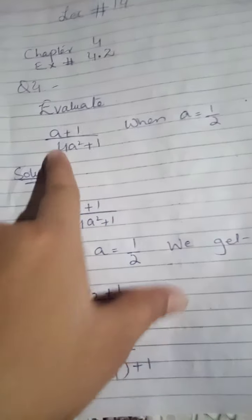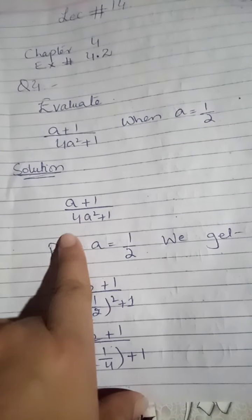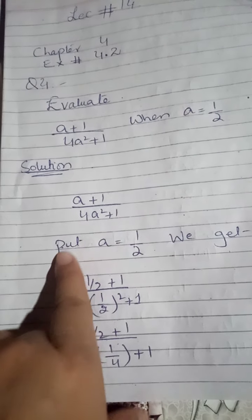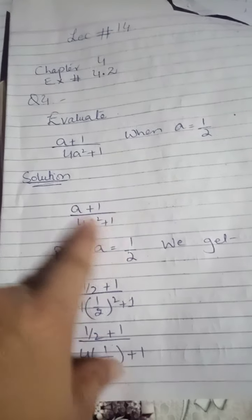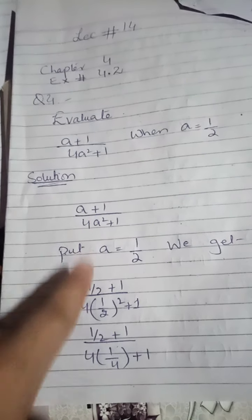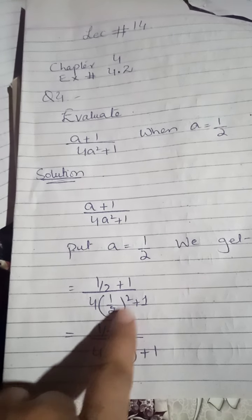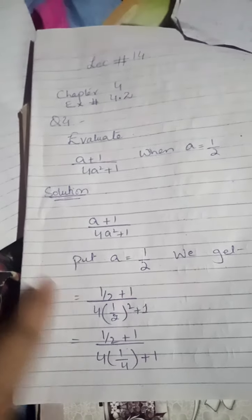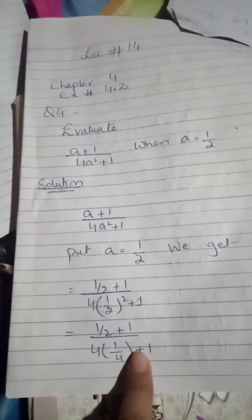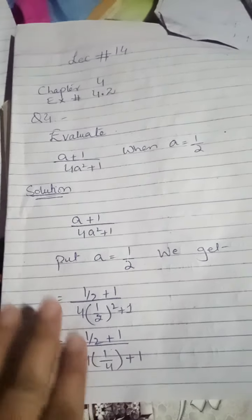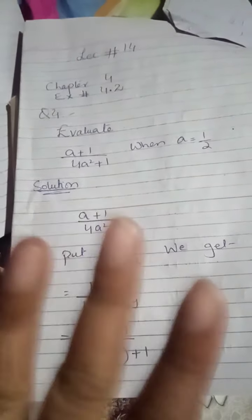आप A की value 1 by 2 put करेंगे — A plus 1 divided by 4A squared plus 1 है। ठीक है, put A is equal to 1 by 2, we get... A की value जहाँ जहाँ नजर आ रहा है इस question के अंदर, हमने A की value 1 by 2 put कर दीनी है — plus 1, ठीक है, 4 as it is, A की जगह हमने put किया 1 by 2, का whole square plus 1। Simply मैंने क्या किया कि A की value को मैंने इस question में put कर दिया।